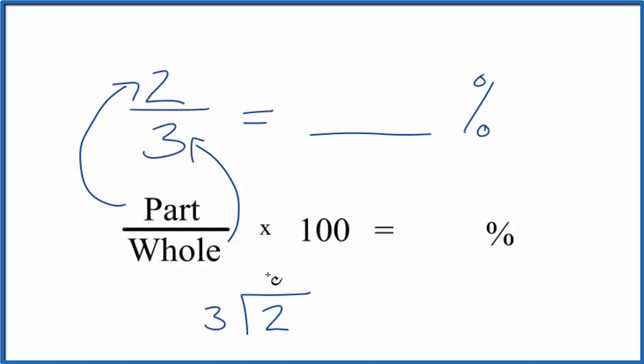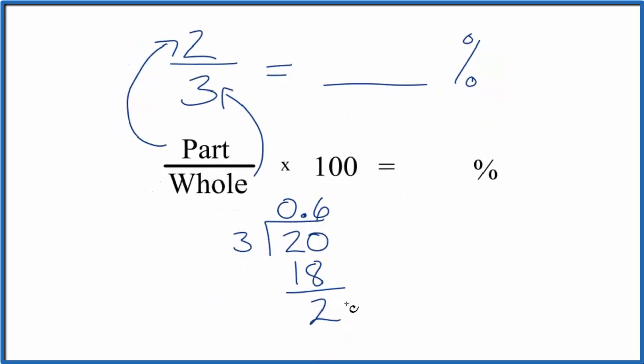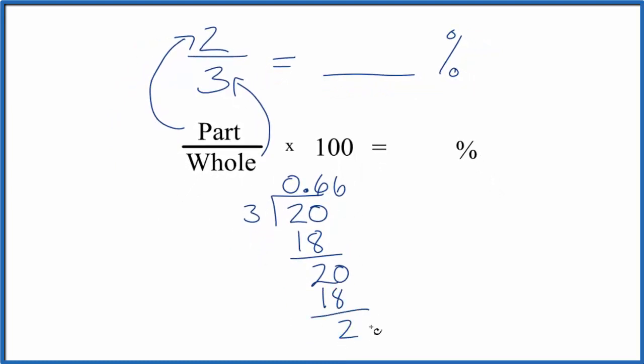3 doesn't go into 2 so we'll go 0 point and make this 20. 6 times 3 that's 18. So we subtract we get 2. Move over a decimal place. 6 times 3 is 18. We get 2 and you can see that it just keeps repeating.